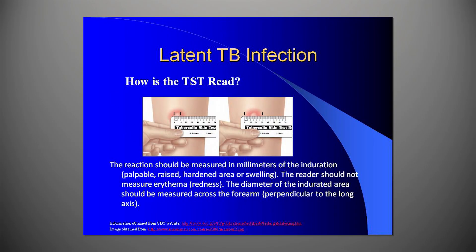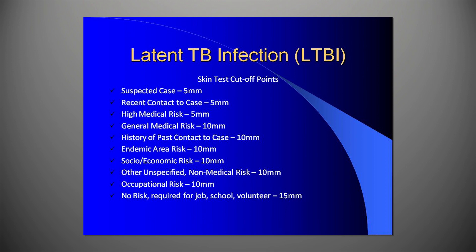To read the TST, the reaction should be measured in millimeters of the induration, which is the palpable raised hardened area of swelling. The reader should not measure erythema or redness. The diameter of the indurated area should be measured across the forearm, perpendicular to the long axis. Skin test reading cutoff points depend upon the patient's risk level for active TB disease. Refer to the slide or visit the CDC website for skin test cutoff points.